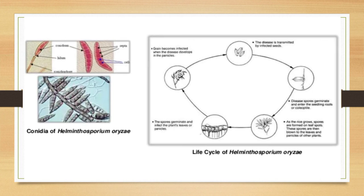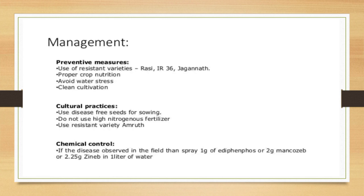Conidia are 6 to 12 septate and conidiophores are septate. Management — preventive measures: use resistant varieties such as Rasi, IR 36, or Jagannath; maintain proper crop nutrition; avoid water stress; practice clean cultivation; use disease-free seeds; and do not use high doses of nitrogenous fertilizer. Use resistant variety Amruth. Chemical control: if disease is observed, spray 1 gram edifenphos, or 2 grams mancozeb, or 2.25 grams zineb in one liter of water.